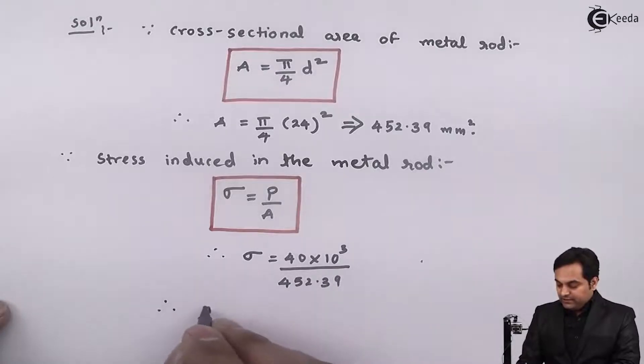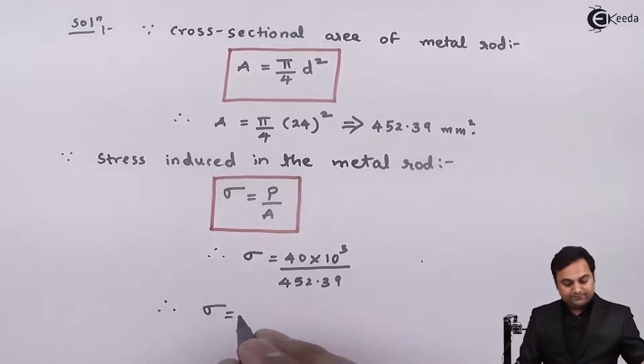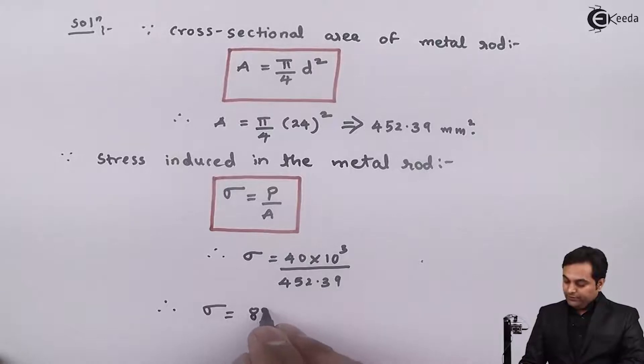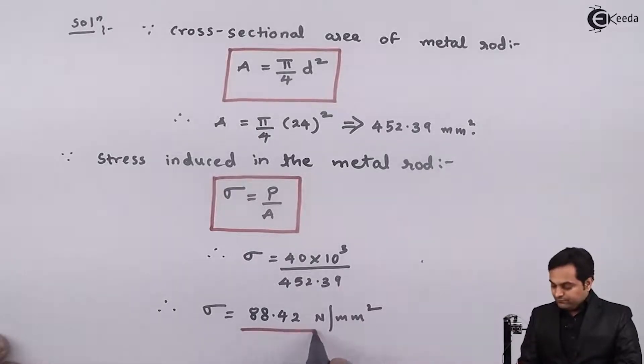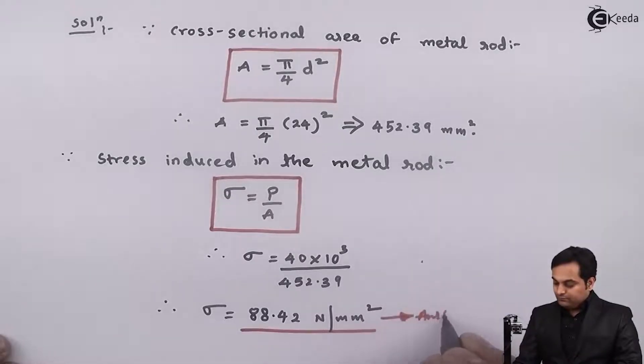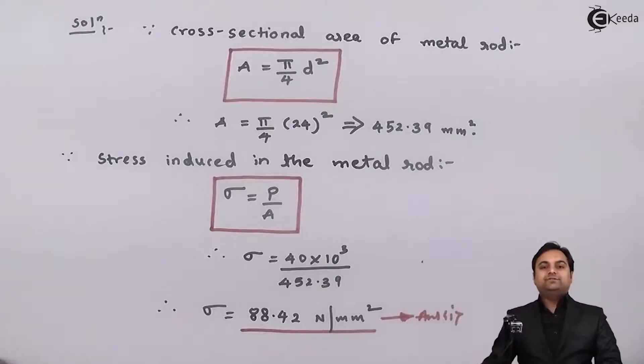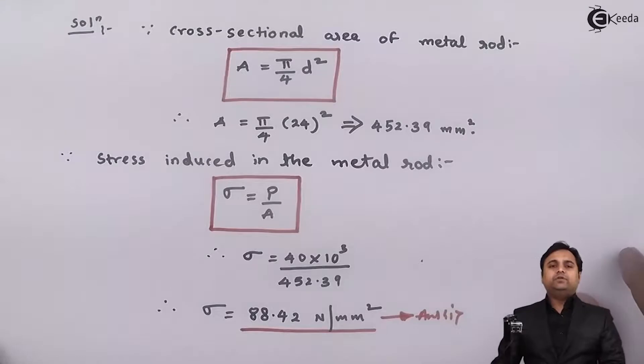So from this I will get the first answer and it is 88.42 Newton per mm square. So this is the first answer. Next in the question they have mentioned we have to calculate Young's modulus.